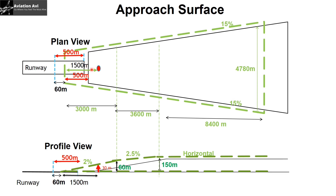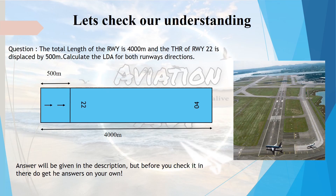Initially the distance between the obstacle and the beginning of the approach surface was 1,000 meters. After displacing the approach surface by 500 meters, the distance from the obstacle to the beginning of the approach surface becomes 1,500 meters, so the obstacle no longer infringes the approach surface. The threshold is also displaced by 500 meters, and the distance between the new approach surface and the new threshold remains 60 meters. In profile view, the 30-meter object is confirmed to no longer infringe the displaced approach surface.